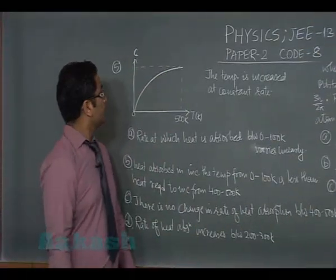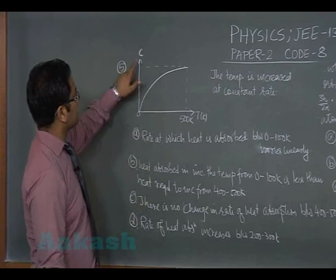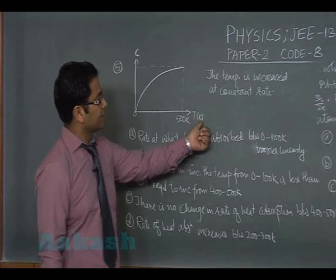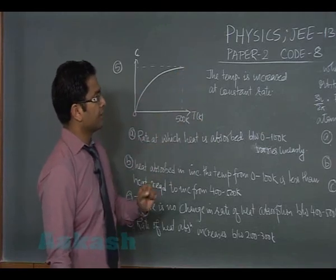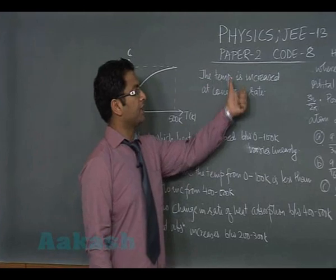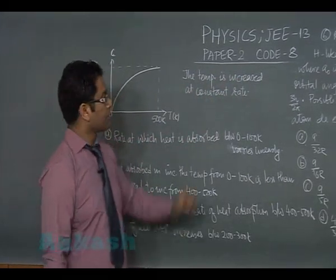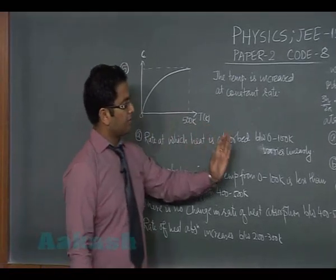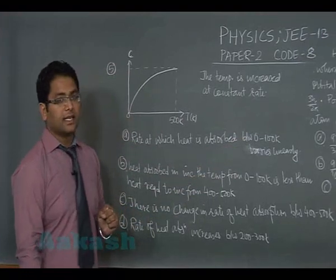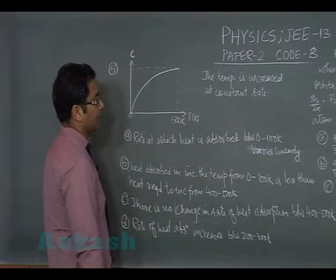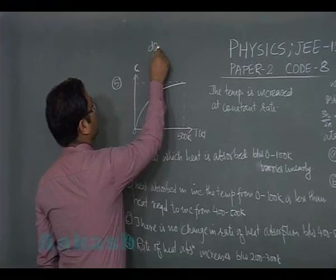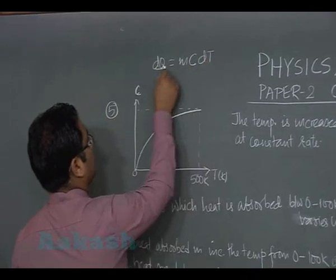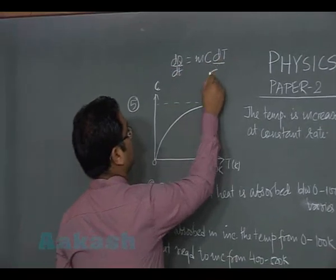Now let's see question number five. It's a variation of specific heat capacity of a solid with respect to temperature, and it goes constant at 500 kelvin. It says the temperature is increased at a constant rate. Based on this we need to answer whether the rate at which heat is absorbed between 0 to 100 kelvin varies linearly. This would be incorrect because dQ is mcD(capital T)/dt, so that would be dt.